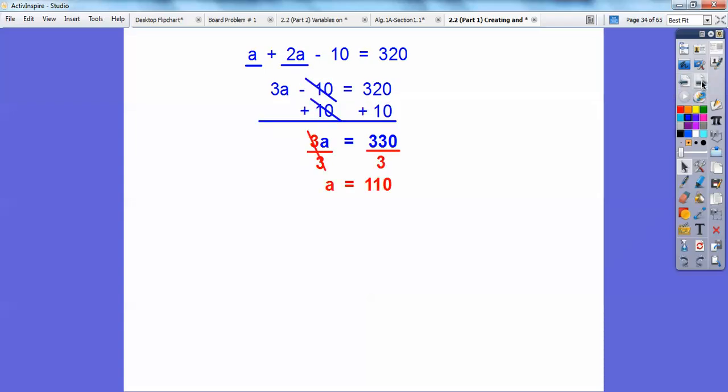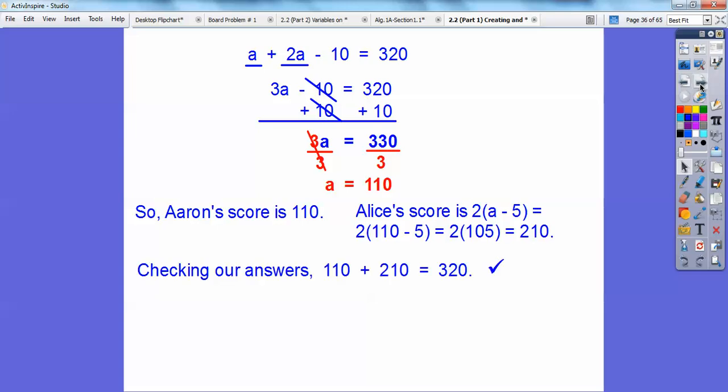Remember A is Aaron's score. So Aaron's score is 110. Alice's is twice the difference of Aaron's and 5. So plug in 110 right there. So 110 minus 5 is 105, and twice that is 210. Let's check our answer. It's always good to check our answer you guys. It did tell us that the sum of their scores was 320. So if we add Aaron's score plus Alice's score it adds up to 320. So check that out.